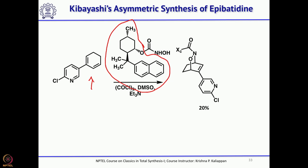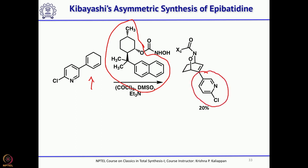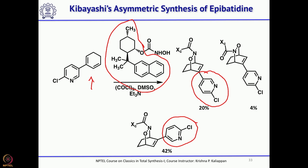Of the three compounds obtained from the hetero Diels-Alder reaction, one had the chloropyridine on the unwanted face, and the required one — where the chloropyridine is on the right side — was obtained in about 42 percent yield. A minor product with the other chiral auxiliary face was also obtained in about 5 percent yield. The major, required isomer was taken forward.